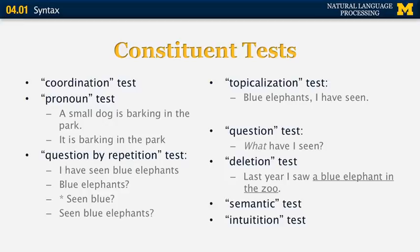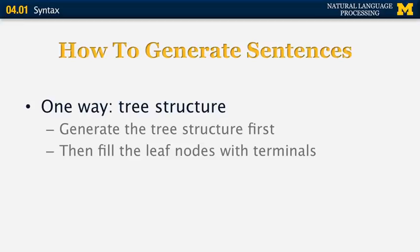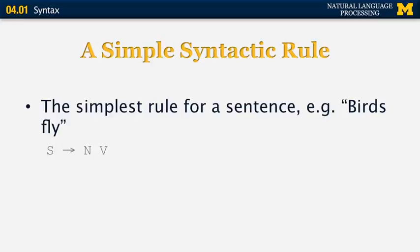Now let's see how we can use tree structures to generate sentences. You have a context-free grammar, start from the so-called start symbol, generate a tree structure that matches the grammar, and fill the leaf nodes with terminal symbols such as individual words. The simplest possible sentence in English is perhaps a noun followed by a verb, something like birds fly. The notation tells us that to generate a sentence, we first produce a noun and then a verb — so if birds is a noun and fly is a verb, birds fly is grammatically correct.